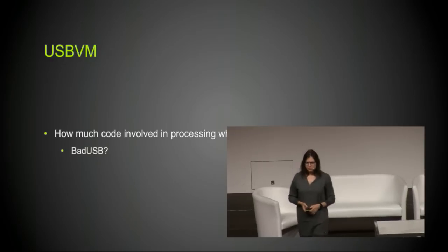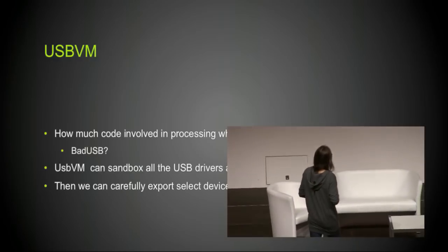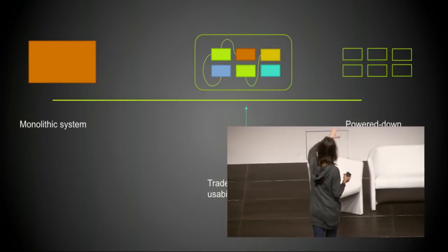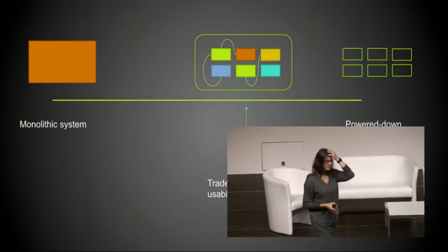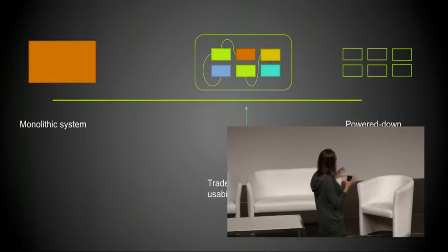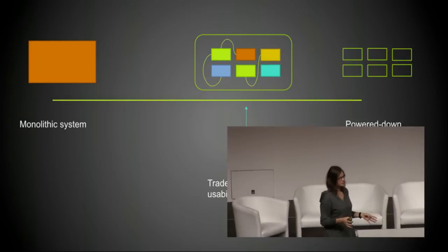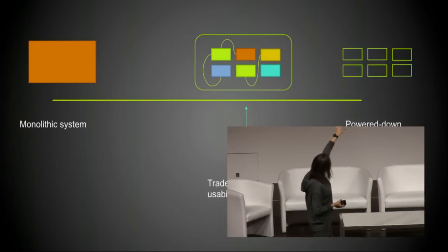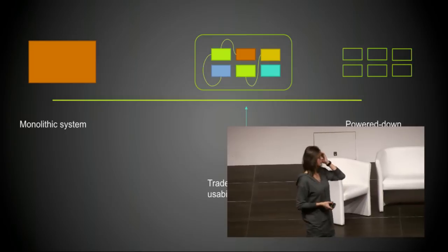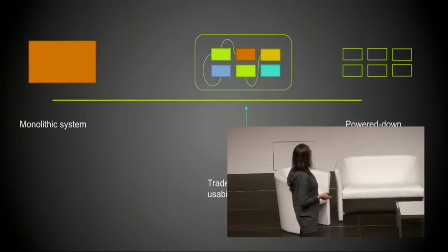In Qubes, by default, we have a net VM — you put all your Wi-Fi and other stacks in a privileged networking domain. This makes you feel good when you use Wi-Fi at an airport, hotel, or conference, because you don't have to worry about potential attacks like the recent DHCP client exploit. Similarly, we can have a USB VM in Qubes with just a few clicks. The picture shows two extremes: a monolithic system where everything runs at the same privilege, versus powered-down air-gapped machines. Qubes tries to find a good balance between security and usability.